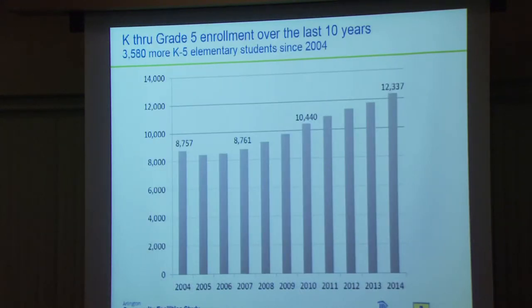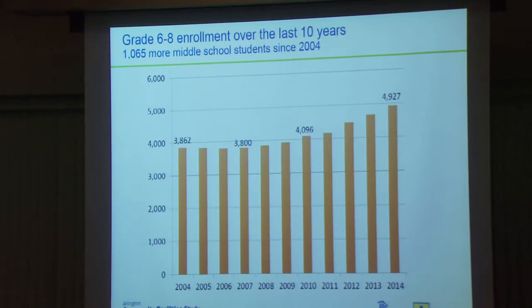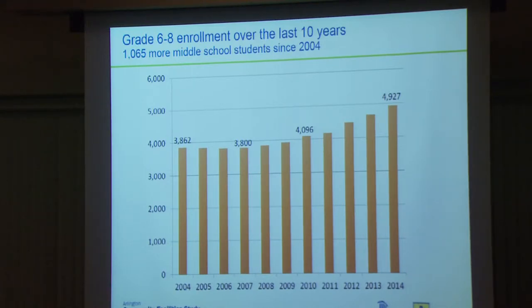Moving on to K-5 growth: kindergarten through fifth grade enrollment growth over the past decade is 3,580 more students since 2004, with a wonderful slope on that line. For middle school enrollment over the past decade, there are 1,065 more middle school students. To give some perspective, Williamsburg Middle School has a capacity of 997 seats — so over the past decade we've grown the equivalent of our largest single middle school.